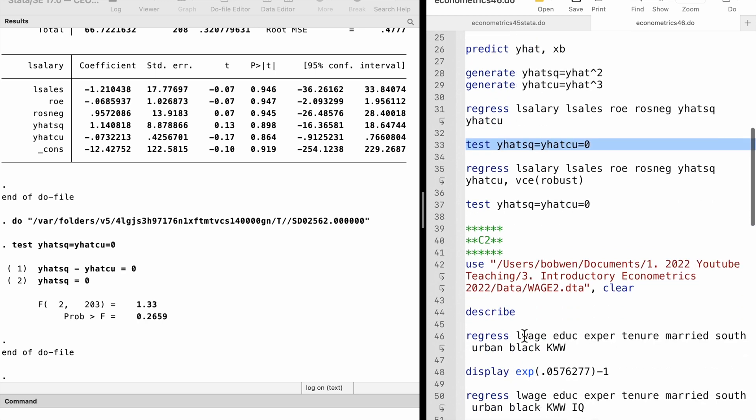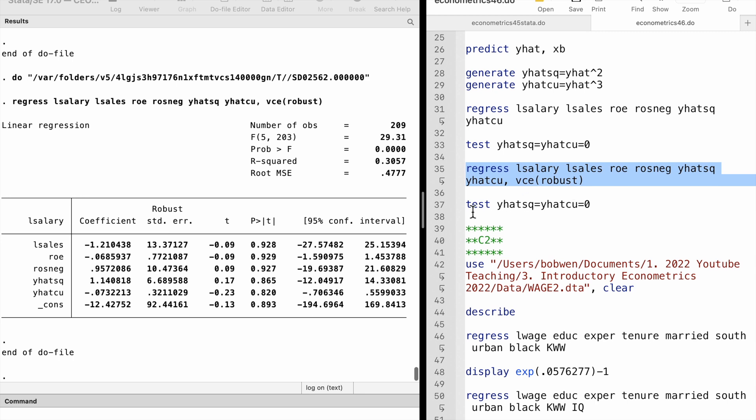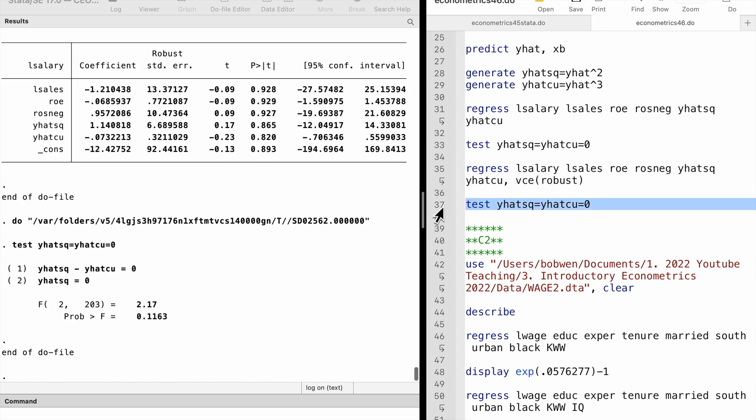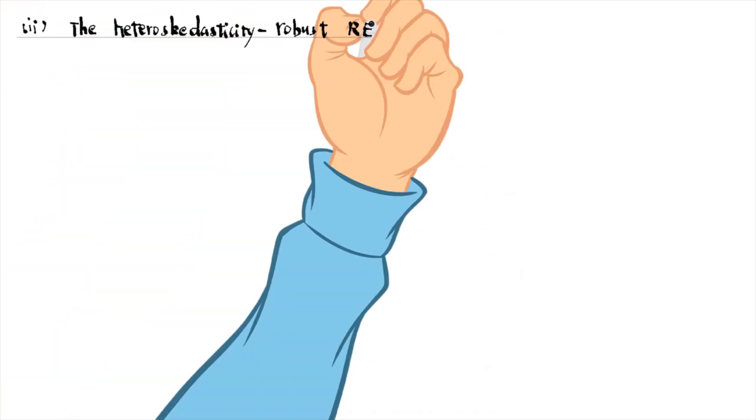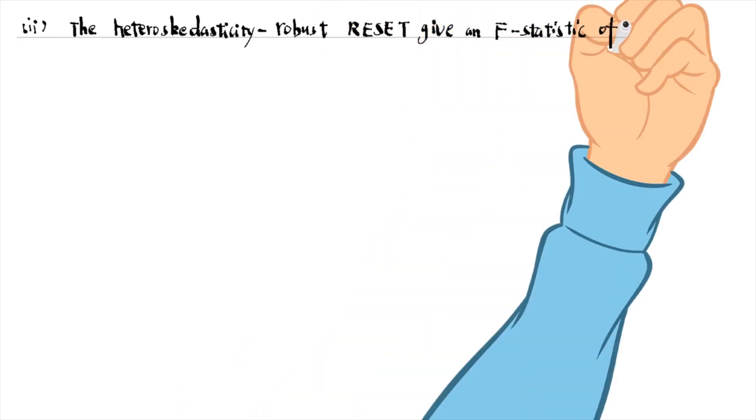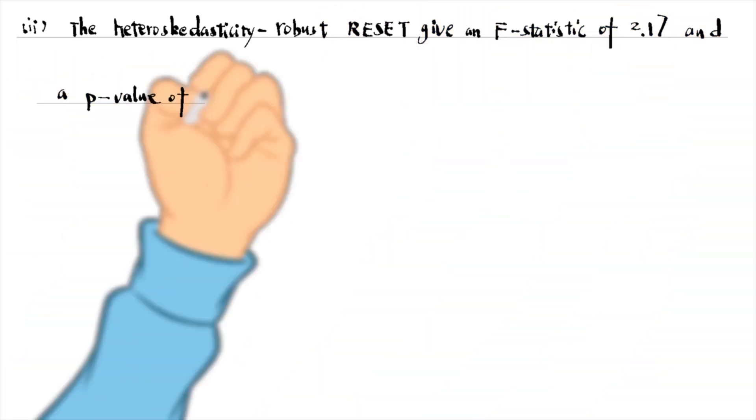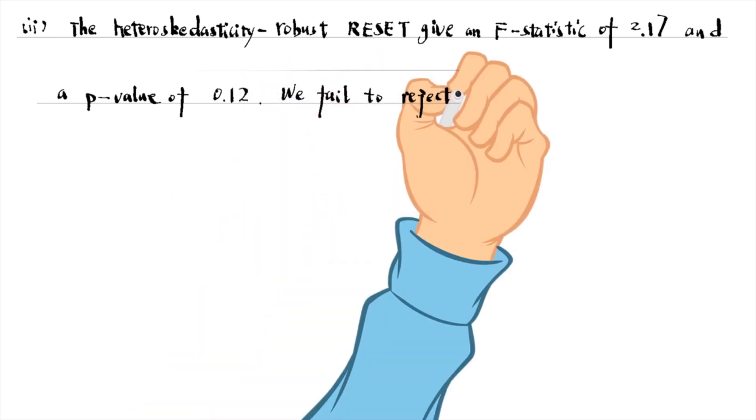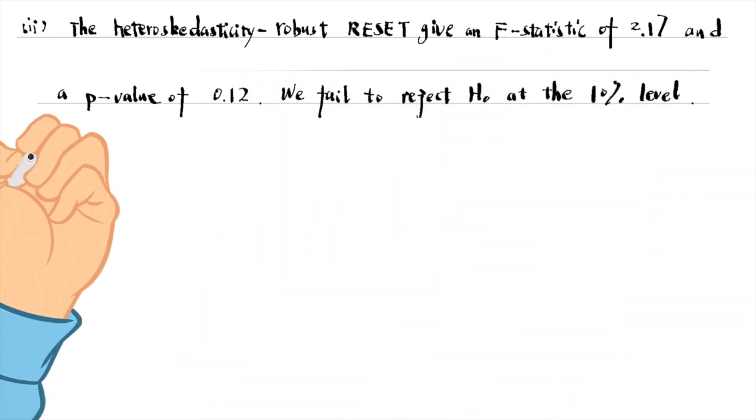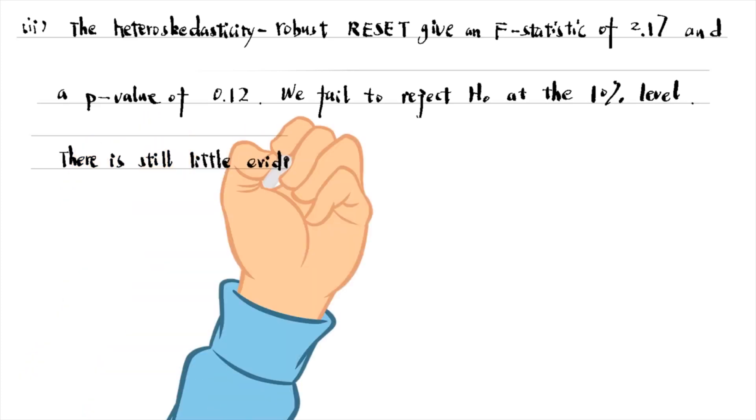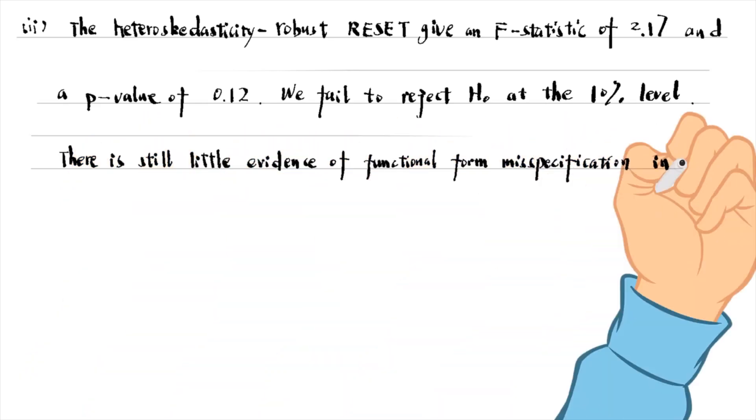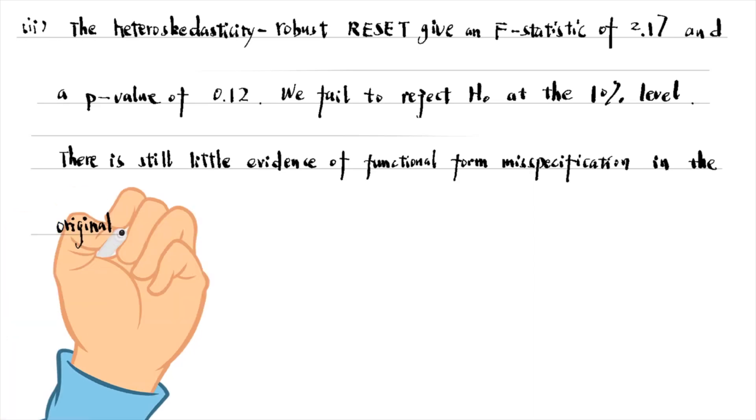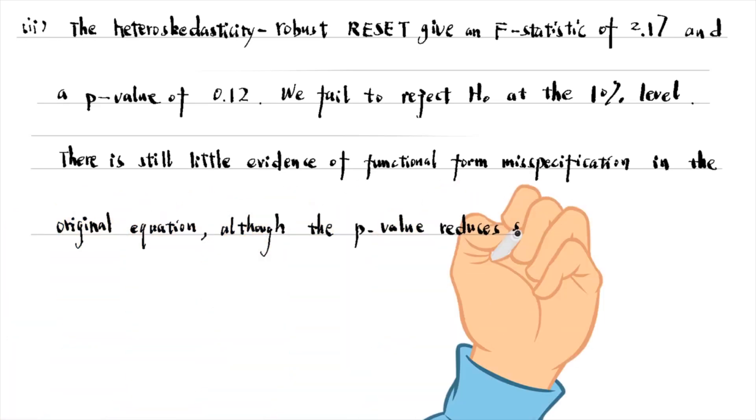For part 2, the heteroscedasticity robust RESET gives an F-statistic of 2.17 and the p-value of 0.12. We fail to reject the null hypothesis at the 10% level. There is still little evidence of functional form misspecification in the original equation, although the p-value reduces substantially.